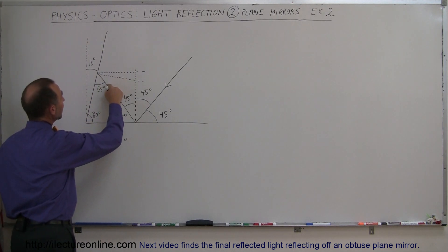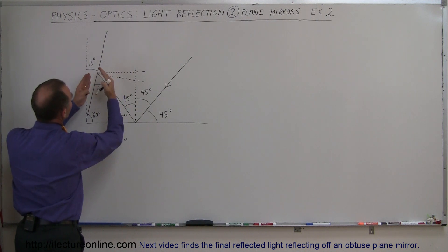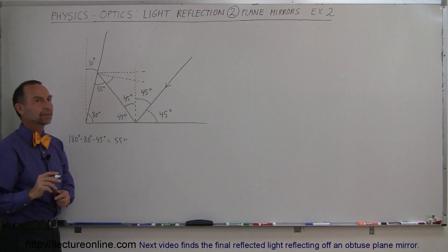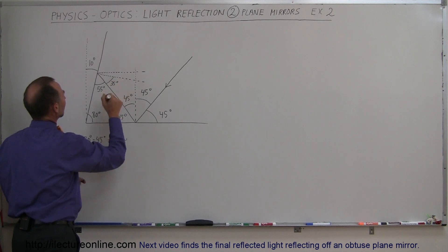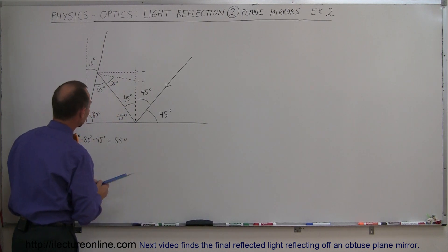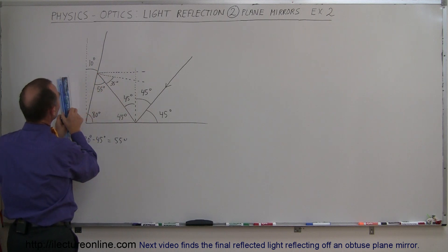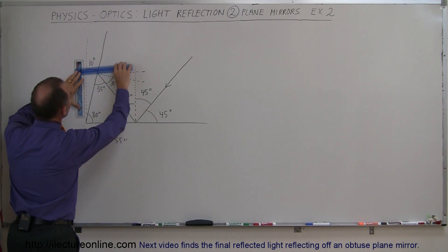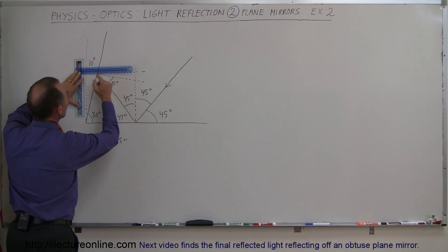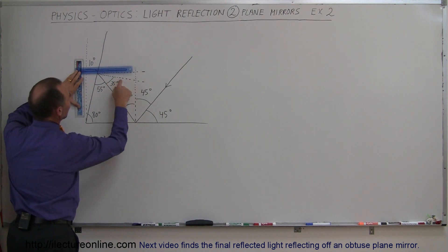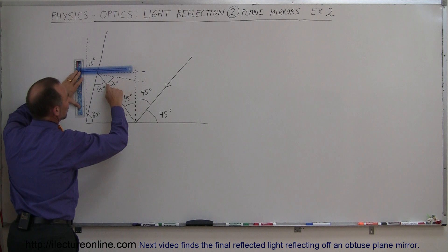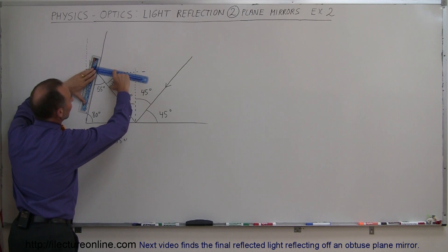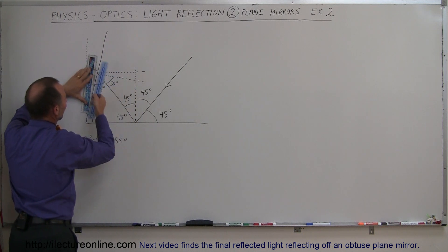Since there's a 90 degree angle between the mirror and its perpendicular, if this angle is 55 degrees, then this angle here must be 35 degrees — the angle of incidence at the second mirror. To put it another way: if the mirror was not tilted, this angle would be 45 degrees relative to the normal. But because the mirror is tilted 10 degrees, the angle of incidence is now only 35 degrees.